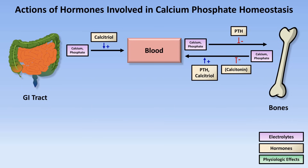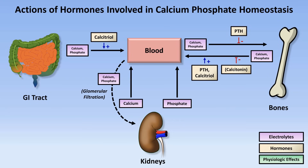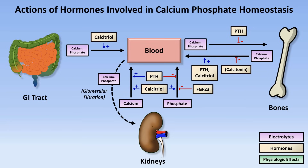Besides bone turnover, the other path for calcium and phosphate is glomerular filtration in the kidneys. After filtration, PTH stimulates reabsorption of calcium but blocks reabsorption of phosphate, while calcitriol stimulates reabsorption of both calcium and phosphate. The reason it's critical for PTH to cause phosphate excretion in the urine is that otherwise, if calcium and phosphate were reabsorbed in equal amounts, they would just complex with one another, leading to no net increase in the free ionized and physiologically active form of calcium. In addition, FGF23 inhibits phosphate reabsorption in the renal tubules — probably its most important function — and since its expression is stimulated by hyperphosphatemia, this acts as negative feedback to regulate serum phosphate.